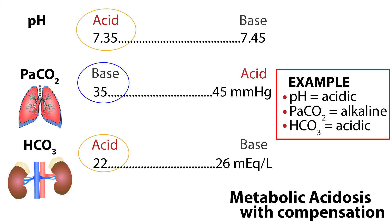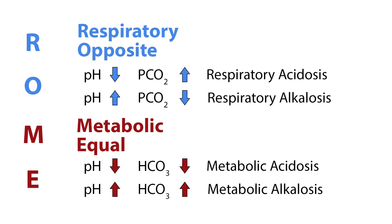We've looked at how the levels of CO2 and HCO3 can alter the blood pH. However, the body does try to bring the pH back to normal by compensating for the imbalances. For example, if the pH is acidotic, the CO2 is alkalotic, and the HCO3 is acidotic, then both the HCO3 and pH are acidotic, making the primary acid-base disorder metabolic acidosis. The CO2 is opposite of the pH, and would be evidence of compensation from the respiratory system.